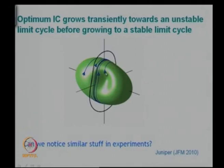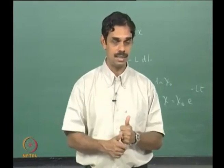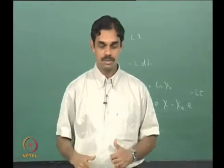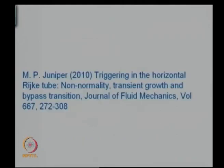The optimum initial condition actually grows transiently towards the unstable limit cycle. It first starts from some low energy point, comes to the unstable limit cycle, loops around it for some time because it cannot really stay there. The unstable limit cycle has several attractors attracting toward it but one neutral direction along the limit cycle and one direction kicking it away. Eventually it will try to float around it, but then suddenly it will sling-shot and go towards the unstable limit cycle.